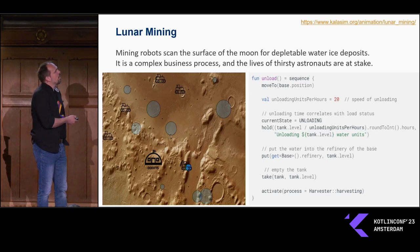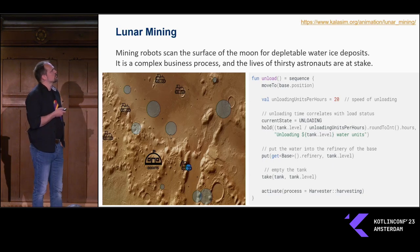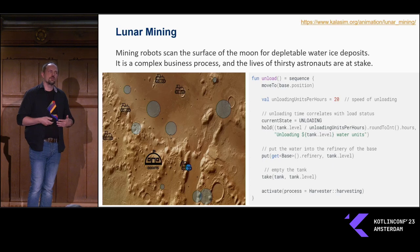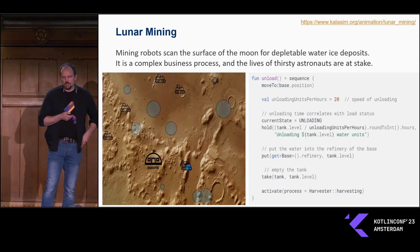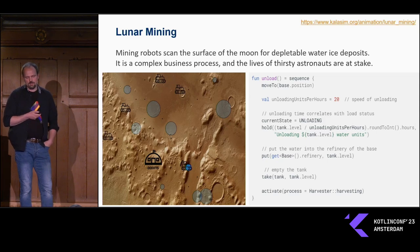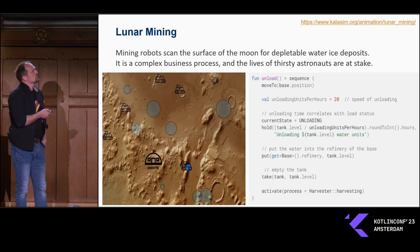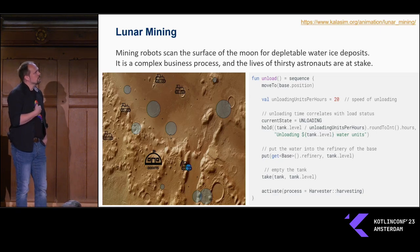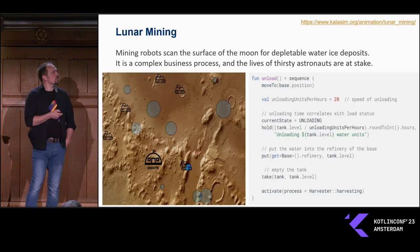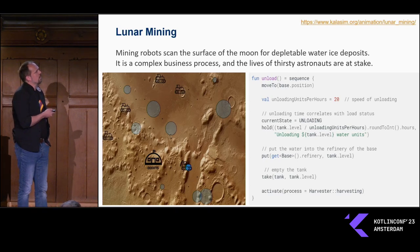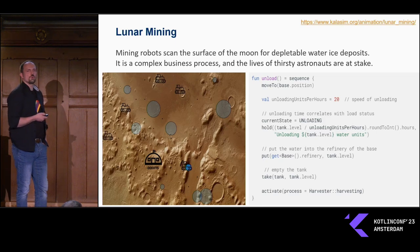We can model this with the API very nicely — it's just 250 lines in total. One important aspect is that once we have mined some water ice and are bringing it back to the base, we need to unload the cargo. First we move to the base, then we change the state of this robot device into unloading, unload the cargo, and put all the water ice into the refinery of the base itself. At the very end, we can activate another part of the process definition so the harvesting device goes back searching for new water ice deposits.